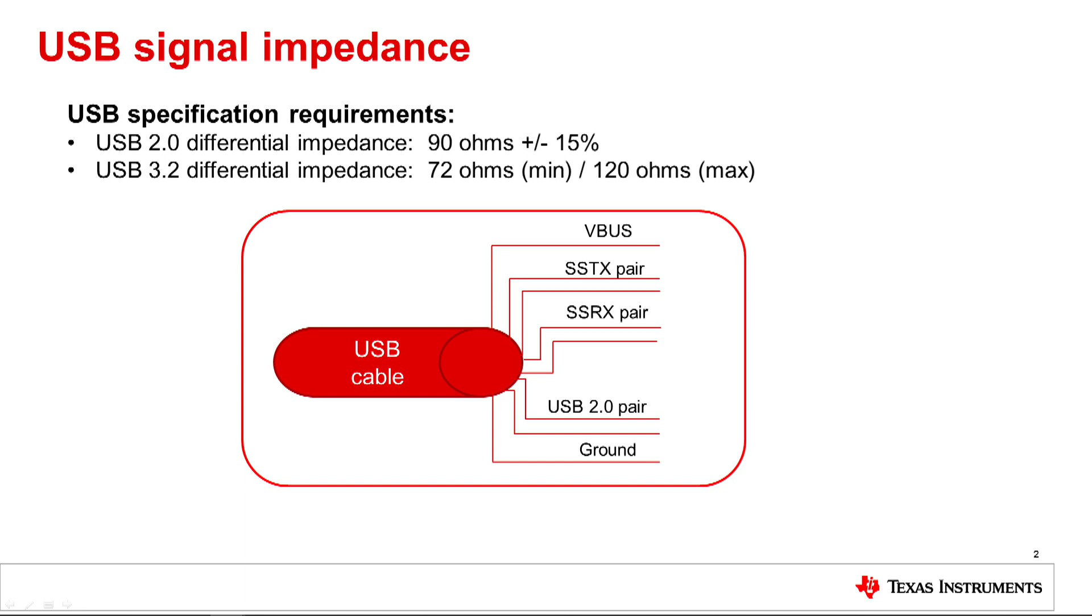The USB 2.0 specification defines a differential characteristic impedance of 90 ohms plus or minus 15% for the USB 2.0 differential pair. The USB 3 specification defines a differential characteristic impedance range of 72 ohms to 120 ohms. To optimize signal quality, this differential impedance should be maintained across the entire USB path from the transmitter through the PCB traces to the connector and cable and over to the next connector, PCB traces and receiver. Impedance discontinuities can result in signal reflections and degrade signal quality.